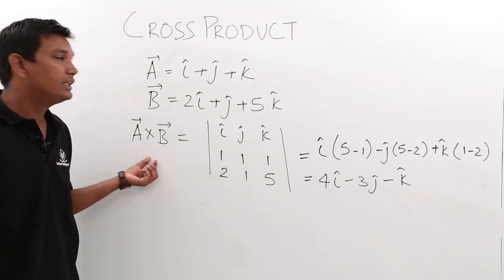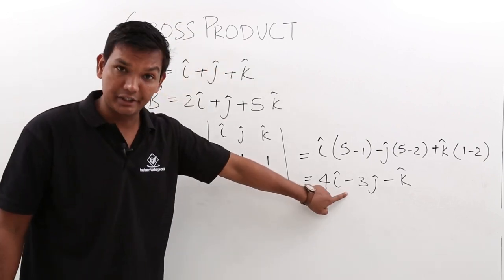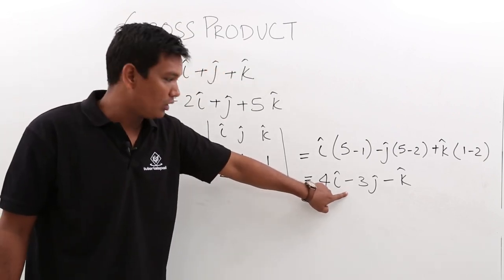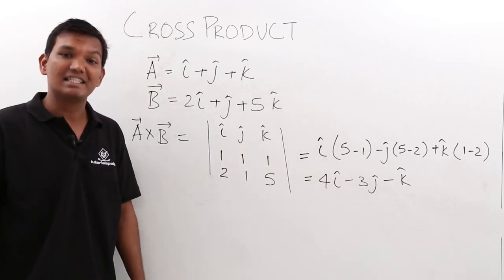Now, if you observe, the resultant of a cross product is always a vector quantity. While in case of dot product, the result was a scalar quantity.